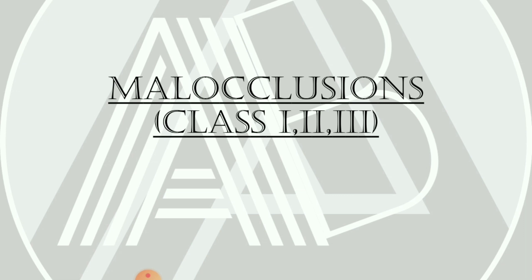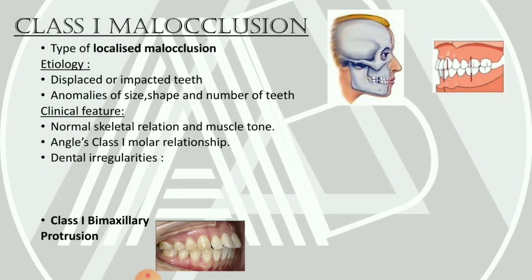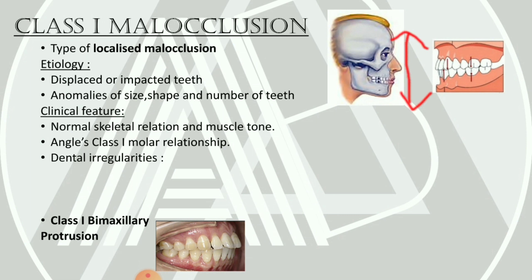Moving on to Class 1 malocclusion. It is a type of localized malocclusion, which can be in the form of displaced or impacted teeth, or any anomaly of the size, shape, or number of teeth. In Class 1 malocclusion, the skeletal relation and muscle tone are absolutely normal. The molars are in Angle's Class 1 relationship — the mesiobuccal cusp of the maxillary first molar occludes in the buccal groove of the mandibular first molar. There may also be dental irregularities such as spacing, crowding, rotations, and missing teeth.